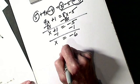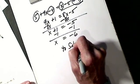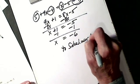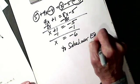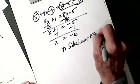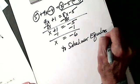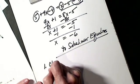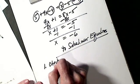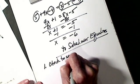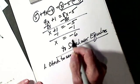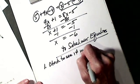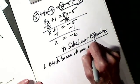So, to solve linear equations, the first step is to check to see if we can use distributive property.